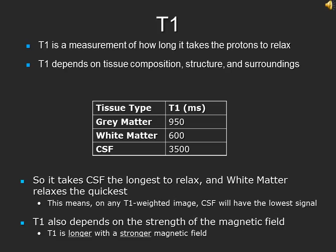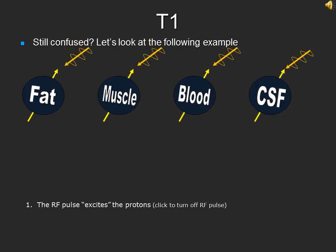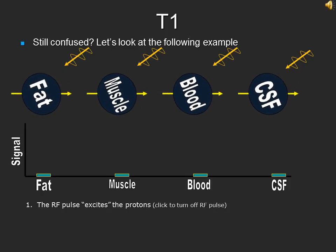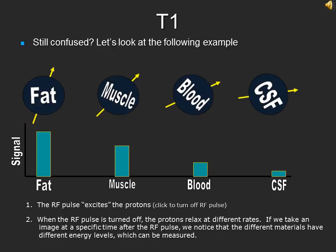This means that CSF will take the longest to relax and have the least signal at any given point on a T1 weighted image. It should be noted that T1 depends on the strength of the external magnetic field, so that a stronger magnetic field will give you a longer T1. After the RF pulse excites the protons, they will relax at different rates — fat will relax the fastest, and CSF the slowest. If we take a snapshot of the protons relaxing, we see that fat will have the greatest signal, while CSF will have the lowest signal on a T1 weighted image.